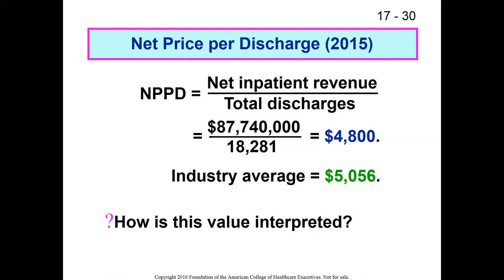There's also variation across geography. If you look at Medicare reimbursement, there is a geographic price adjuster based on the location of your organization. It adjusts the amount you're allowed to bill based on how expensive your geographic area is. If you operate in New York City, you'll get a higher adjustment than if you operate in rural New Hampshire. So picking the right industry average and the right comparison criteria to make as close to an apples-to-apples comparison as possible is really important.